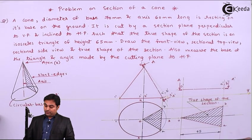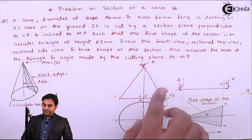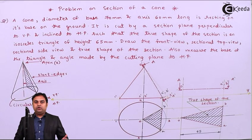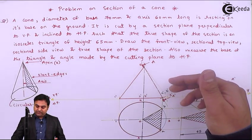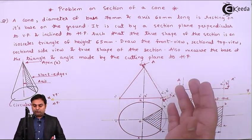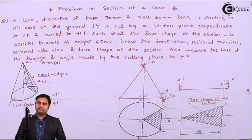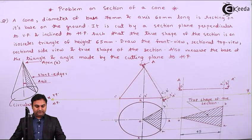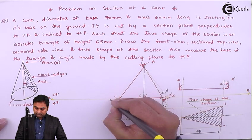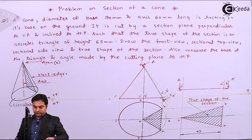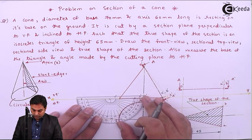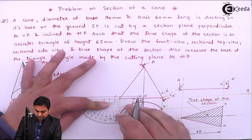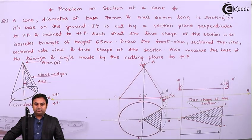In the question it was mentioned to draw the front view — completed; sectional top view — completed; and now the sectional side view. For that we look at the cut cone from the right-hand side and draw it onto the left-hand side using the first angle method of projection. We need to draw the side view in this portion, so I select a point, measure an angle of 45 degrees, and draw a light line through it.